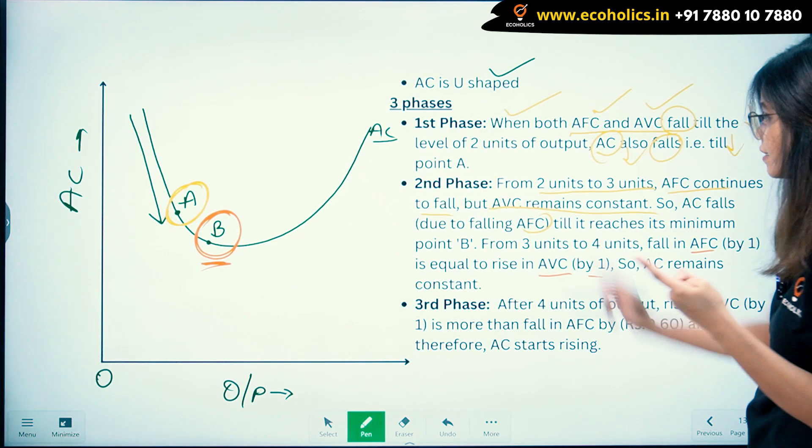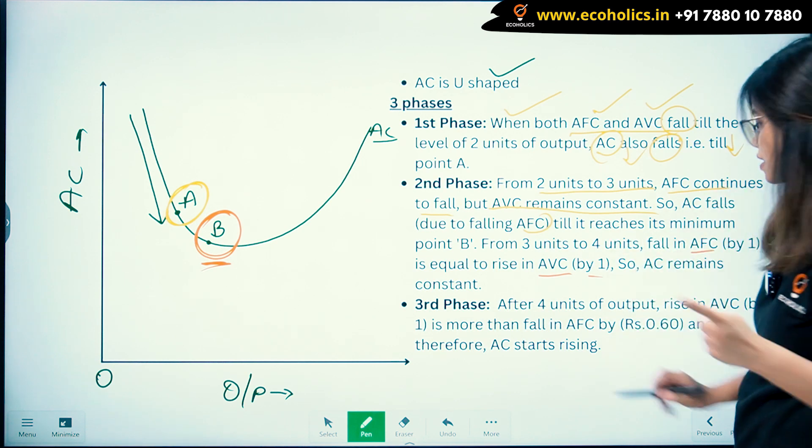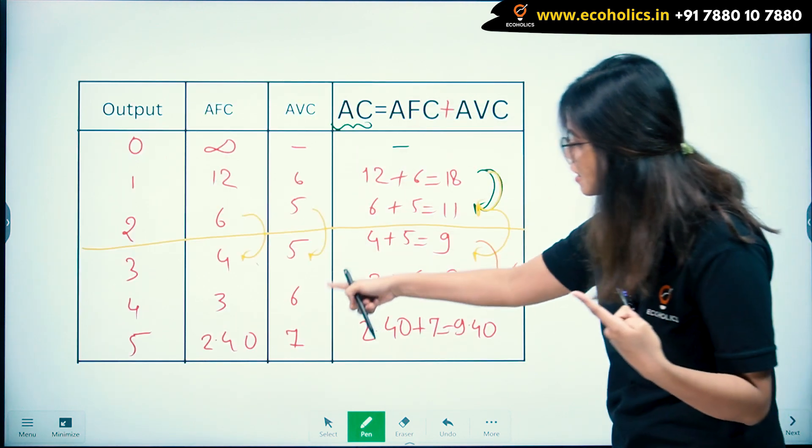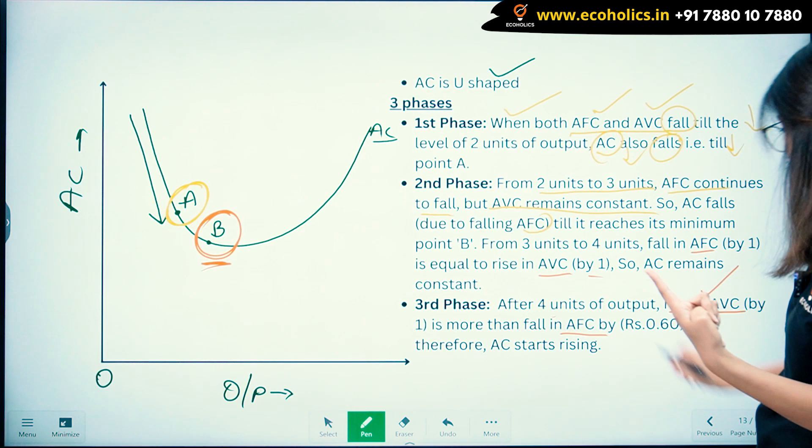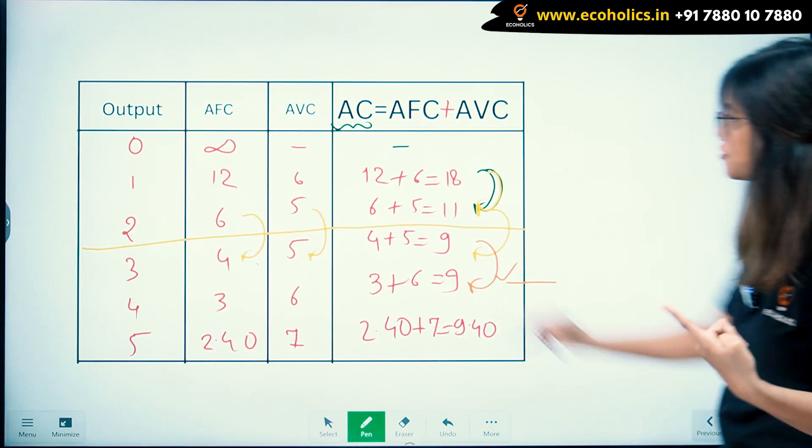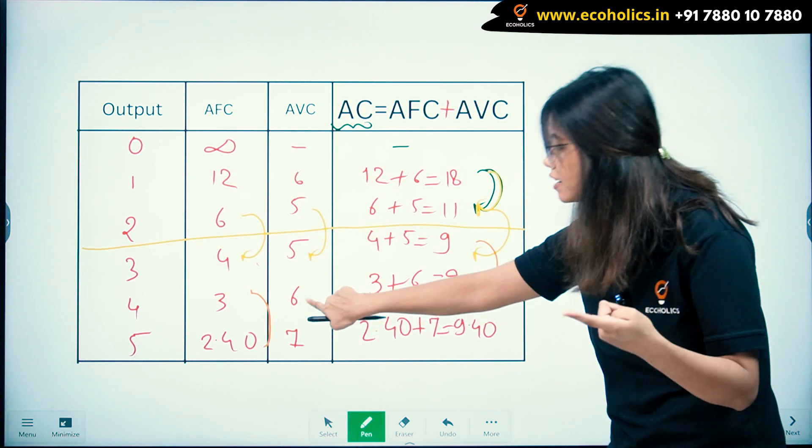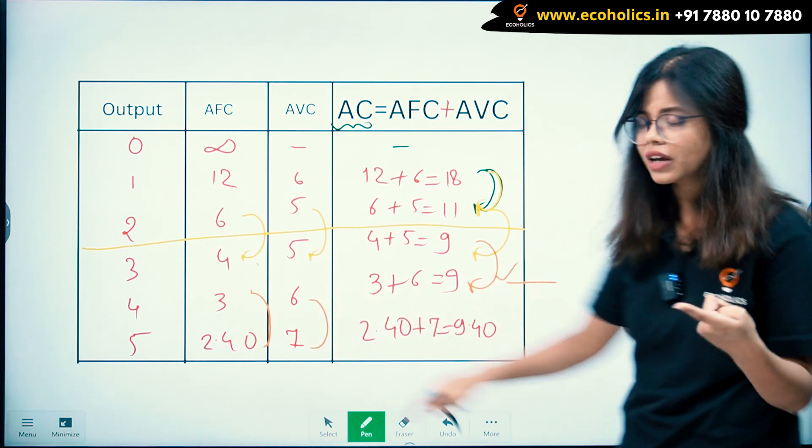Third phase: after four units of output, rise in AVC is more than fall in AFC. You can see AFC is falling, but the rise in AVC is more than this.